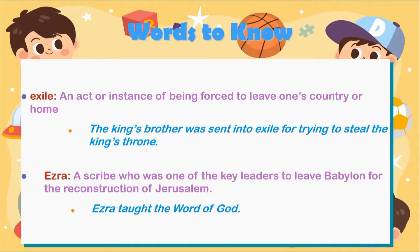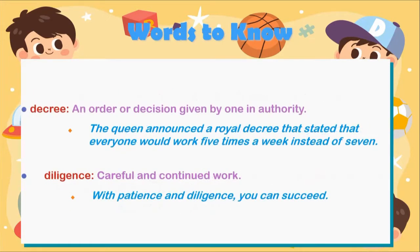Ezra was a scribe. If you notice, S-C-R-I-B-E is a prefix for a lot of words that concern writing or making marks on paper. Not everybody could write back then — only a few people could — and he was one of the key leaders to leave Babylon for the reconstruction and rebuilding of Jerusalem. Ezra taught the word of God. Decree: an order or decision given by one in authority. Example: 'The queen announced a royal decree that everyone would work five times a week instead of seven.'